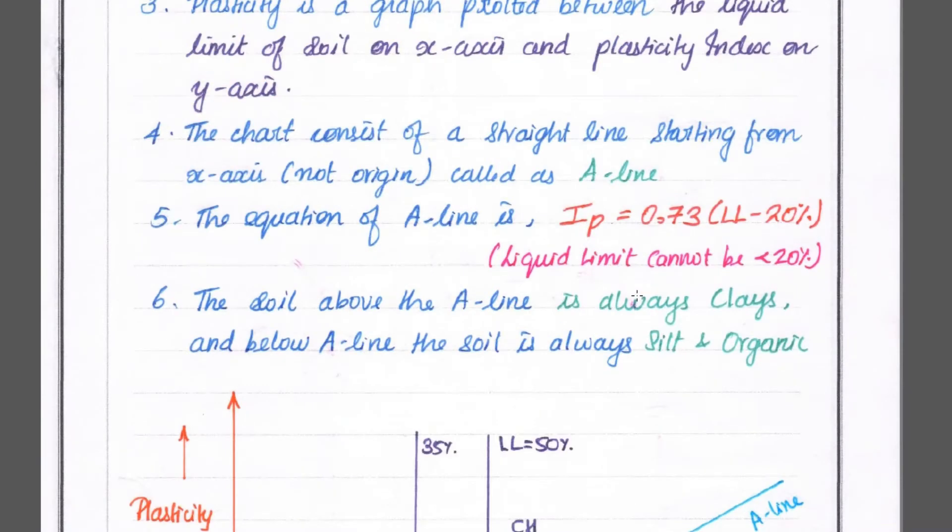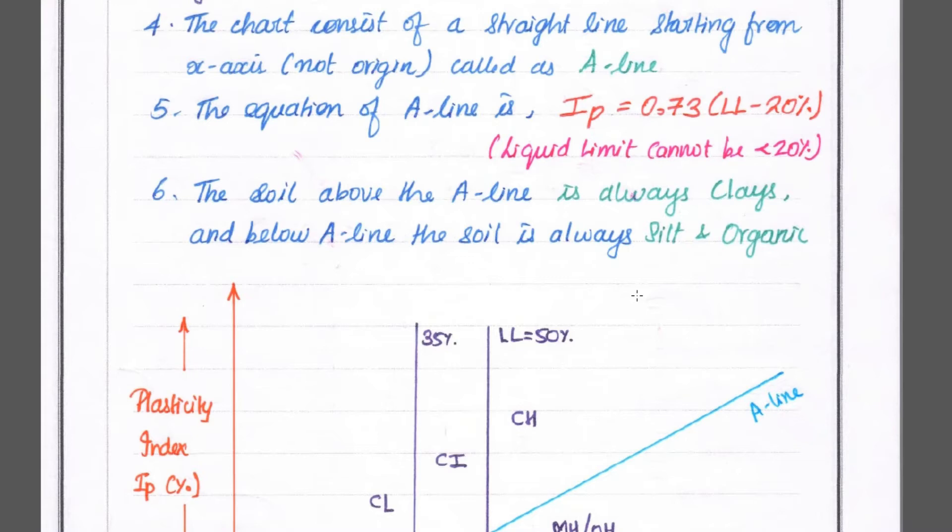The A-line equation is IP = 0.73(LL - 20%). We know the liquid limit cannot be more than 20% in fine-grained soil. The soil above the A-line is always termed as clay and below A-line is classified as silt and organic.